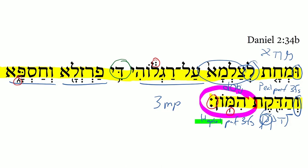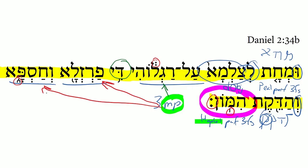So look at this all together: it — so that's the stone — struck the image upon its feet that were of the iron and the clay, and crushed them. So who's the 'them'? Well, it's masculine plural, so it's actually not the feet right here. It is the iron and the clay. So: crushed the iron and the clay.